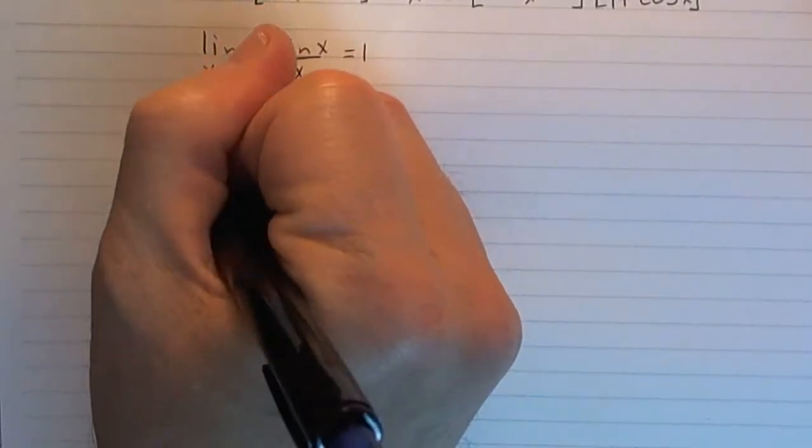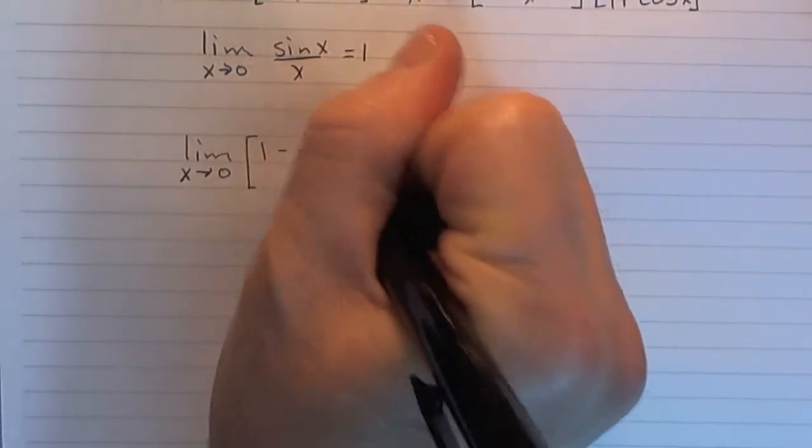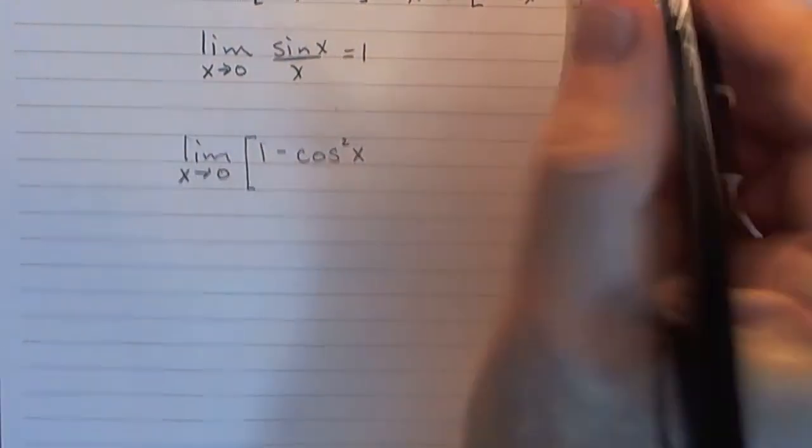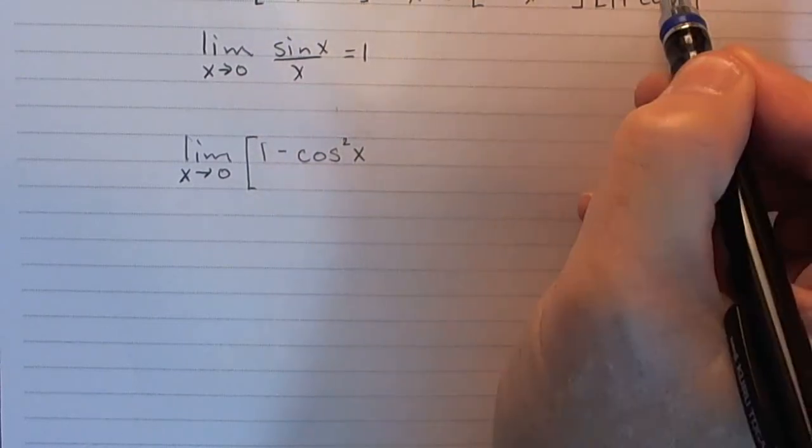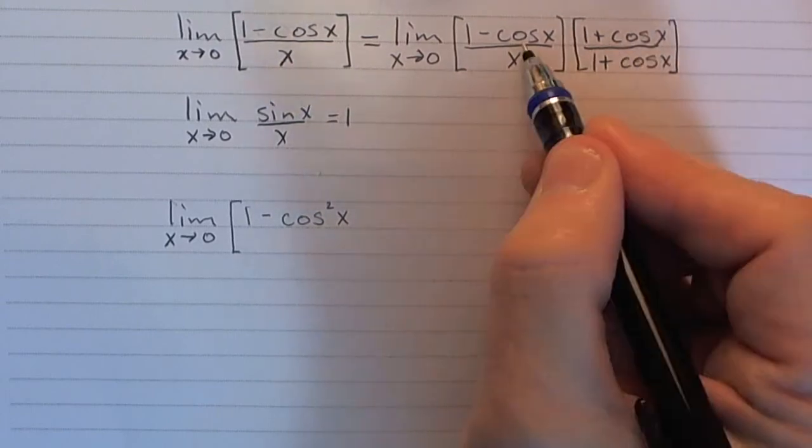Now, when we do that, here's what we get. We get the limit as x goes to 0 of 1 minus cosine squared x. See? If I multiply this top out, it's like a minus b times a plus b. We get a squared minus b squared.